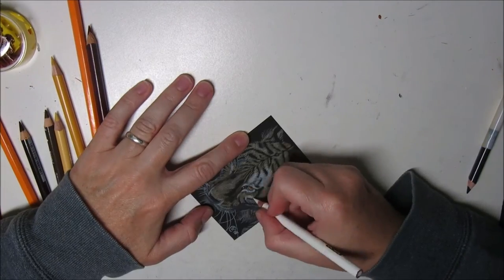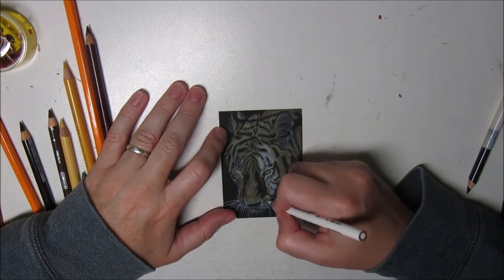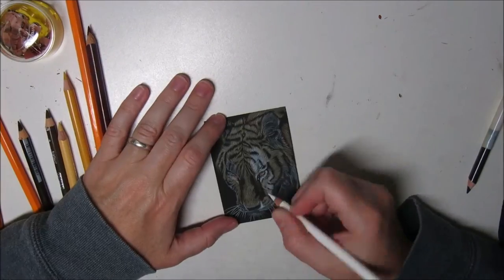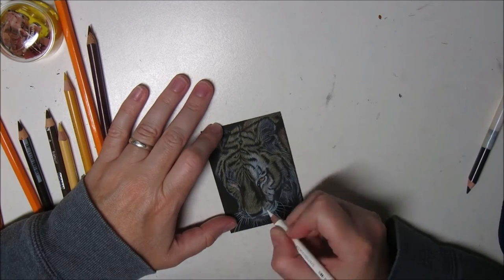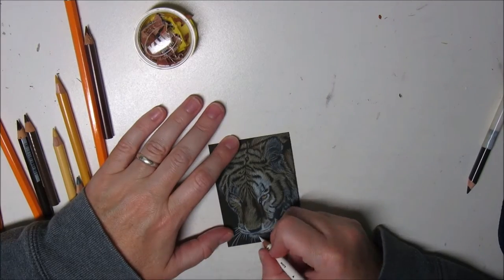Once I've applied that color pretty much all over the drawing, I used my dark—I'm not going to say my darkest because I also used black—but I used the second darkest color, which is dark brown, and I established the darker tones of the fur.